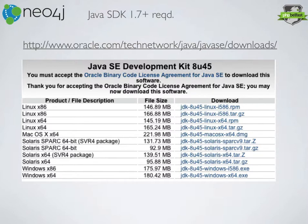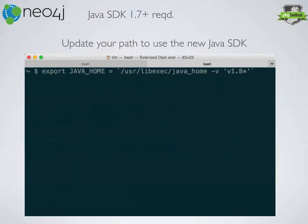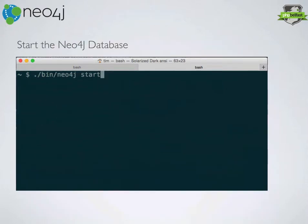Once you've downloaded it, you need to upgrade your path — basically tell your machine where that version of Java is and tell it to use the new version. In this example I've used version 1.8. You just replace a bit in your code depending on whether you downloaded 1.7 or 1.8; 1.8 is the latest at this point in time. Then all you need to do is start the Neo4j database.